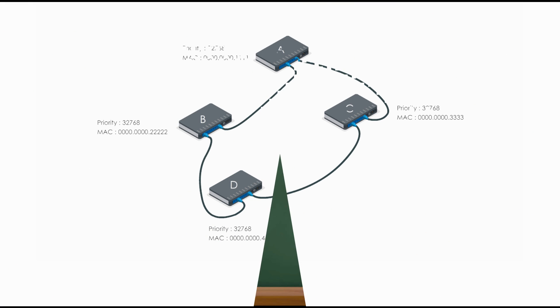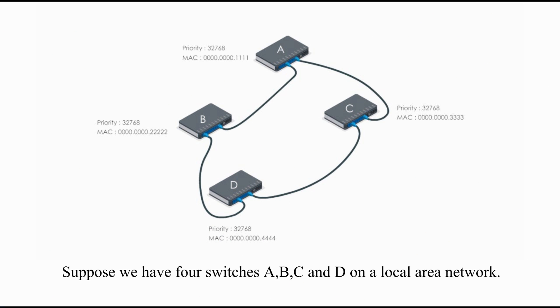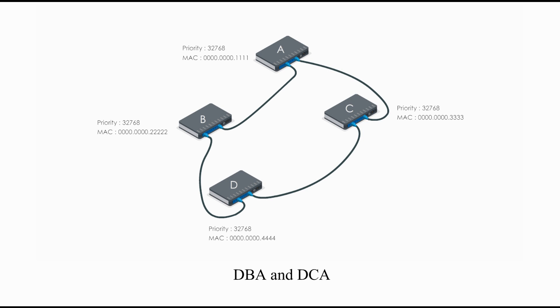Let's look at an example. Suppose we have four switches A, B, C, and D on a local area network. There are redundant links among these interconnected switches. For example, from switch D to switch A, there are two paths: DBA and DCA.